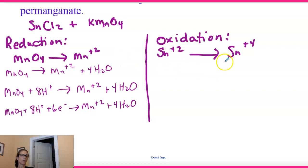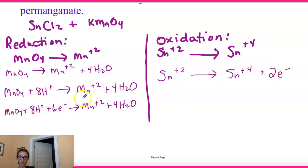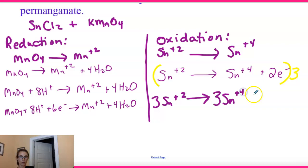For the oxidation half-reaction, there are no oxygens or hydrogens, and tins are already balanced. We have +2 on the left and +4 on the right, so we add 2 electrons to the right: Sn²⁺ → Sn⁴⁺ + 2e⁻. Now we cross-multiply: we have 6 electrons in the reduction and 2 in the oxidation — the LCM is 6. Leave the reduction alone and multiply the oxidation by 3: 3Sn²⁺ → 3Sn⁴⁺ + 6e⁻.